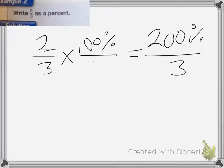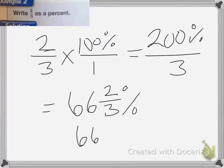Now when I divide it, I end up with 66 and two-thirds percent. You could also write this as 66.66% with the bar over the top if you would like, unless it asks you to write it as a mixed number specifically.